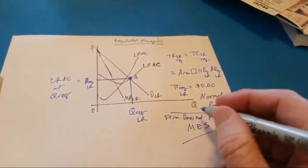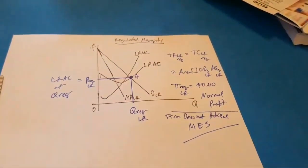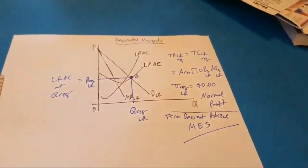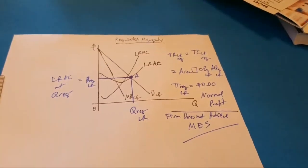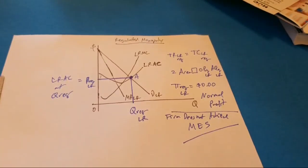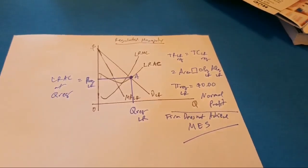That is how you construct the long-run graphs for the different firm structures. Remember: there is only a long-run graph if the firm produced in the short run — profit or loss doesn't matter. You do not have a long-run graph if the firm shuts down in the short run. When the firm shuts down in the short run, we assume they are likely to exit the market. I hope this helps.